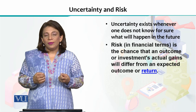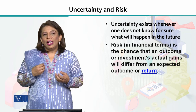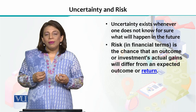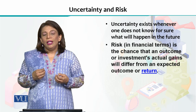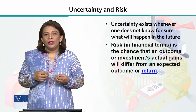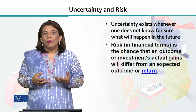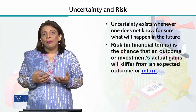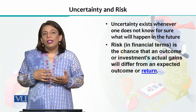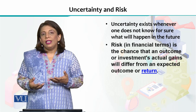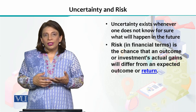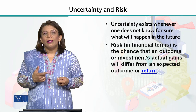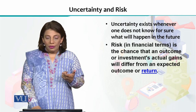For example, if you have invested in a financial instrument and you expect that by the end of the year you will get 6% profit (munaafah), but actually your profit turns out to be 8% or 4%, then that difference will be considered as risk.